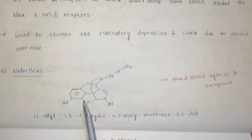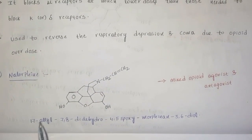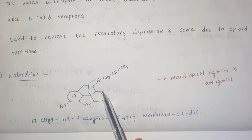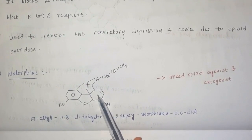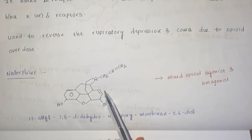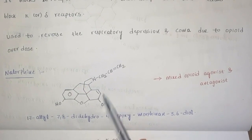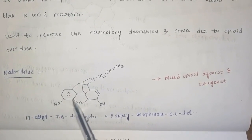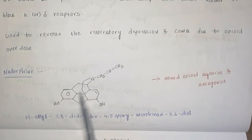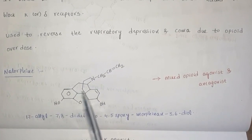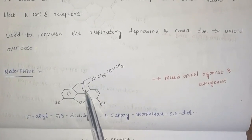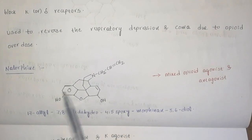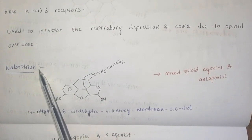Coming to the nomenclature: 17-allyl; the 7,8 position contains an unsaturated bond, so it is called as 7,8-didehydro, 4,5-epoxy. This total structure is called as morphine and it contains a 3,6-diol group, so it is called as nalorphine.